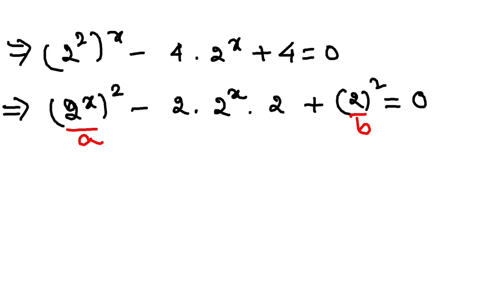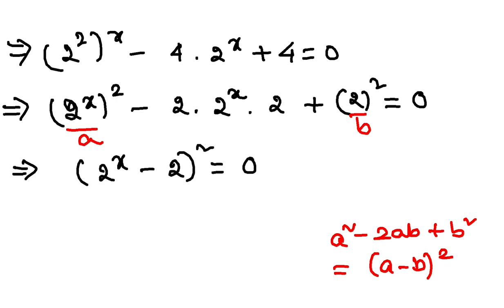This is basically what? a squared minus 2ab plus b squared. a squared minus 2ab plus b squared means a minus b whole squared, isn't it? So from here you will have a. What is your a? 2 to the power x. What is your b? b is 2. So 2 to the power x minus 2 whole squared equals 0.